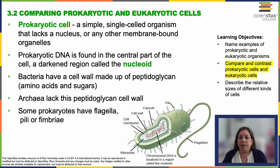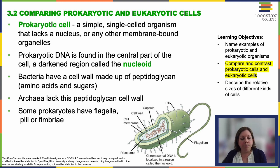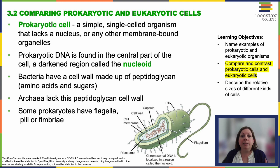Prokaryotic cells are simple and single-celled — there are no true multicellular prokaryotes. They don't have a nucleus or membrane-bound organelles. Their DNA is found centrally located inside the cell in a darkened region called the nucleoid. Bacteria have cell walls made of peptidoglycan, which is amino acids and sugar — a protein and sugar coat. There are different types; you may be familiar with gram-negative and gram-positive. Archaea lack that peptidoglycan cell wall. Some prokaryotes also have flagella, pili, or fimbriae — some for motility, some for reproduction, depending on the organism.